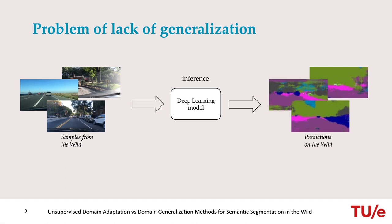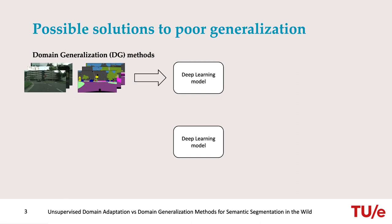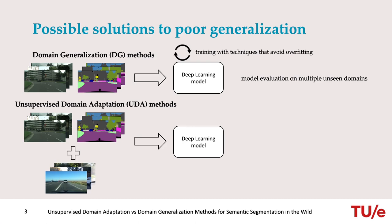This problem is known as lack of generalization, and recently significant research has been focusing on improving the generalization capacity of deep learning models. On a high level, we can identify two tasks that aim to do this: domain generalization methods that can learn a model only with labeled data but evaluate on multiple unseen domains, and unsupervised domain adaptation methods that train not only with labeled data but also with unlabeled data, and evaluate the resulting model on the so-called target domain.